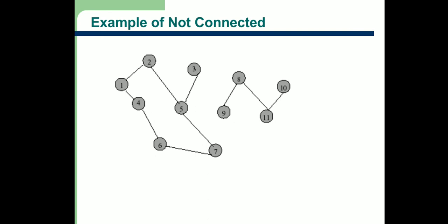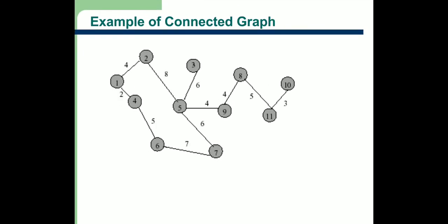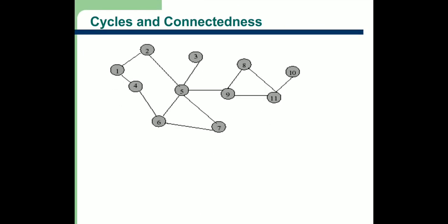Next, regarding cycles and connectedness: if node 5 and node 9 are connected, then a path exists from node 1 to node 10 — for example: 1→2→5→9→8→11→10. This demonstrates a connected graph.